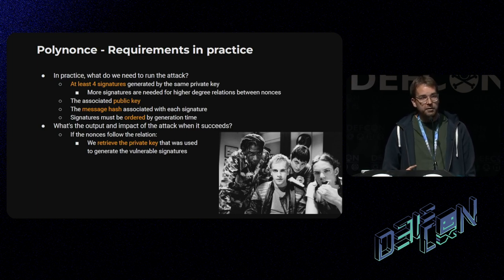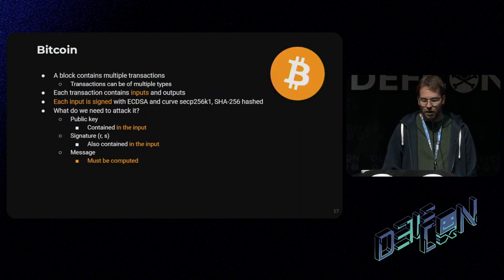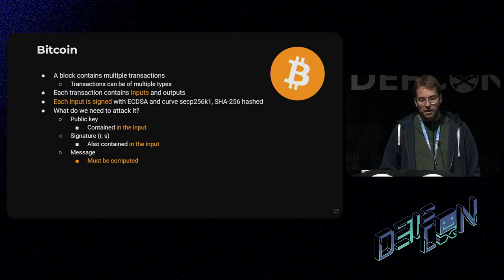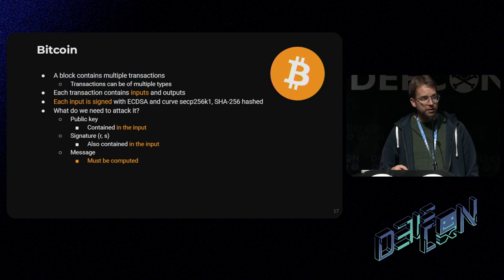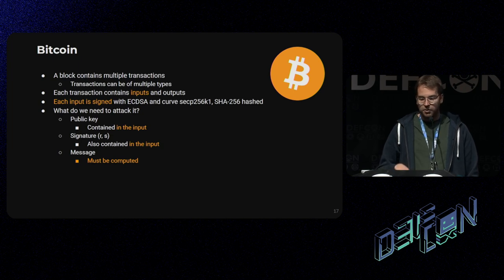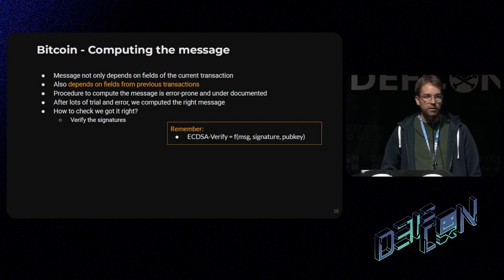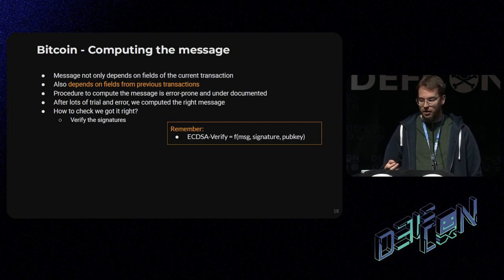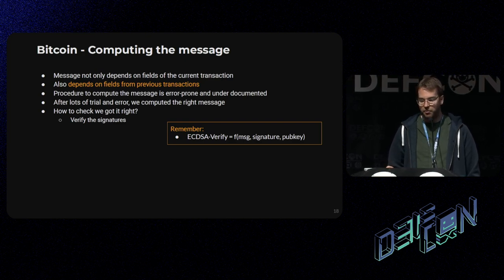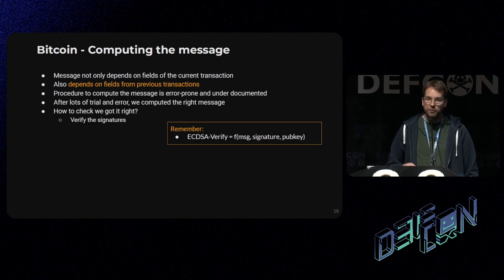So where can we find ECDSA signatures in practice? One good source is Bitcoin. In Bitcoin, you have blocks, and inside blocks you have transactions. These transactions contain inputs and outputs, and these inputs are signed with ECDSA. The public key and the signature are contained in the input. The message, however, you have to compute. And computing that message is a very error-prone and under-documented process. You will need to use fields from the current transaction but also fields from previous transactions, so you need to keep track of all of that.